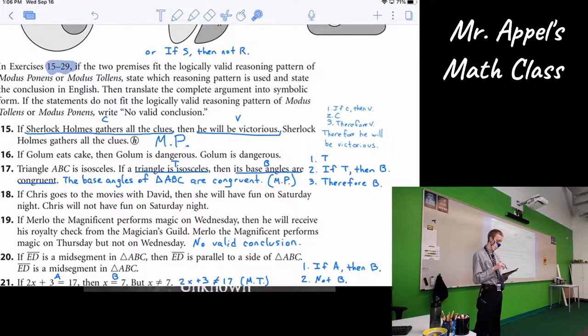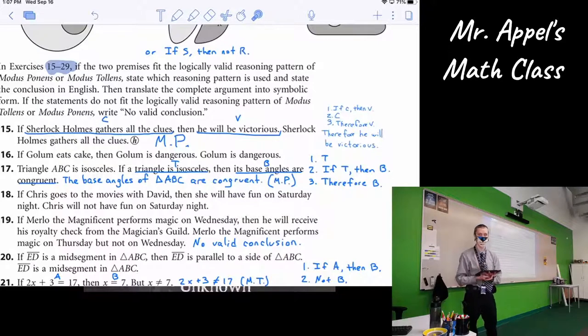Most often we'll find the conditional first and then the statement, but you can put the standalone statement before the conditional. Doesn't make a difference. But definitely last should come your conclusion, therefore, B. And in this case, you want to write it for the particular case. If we're talking about triangle ABC, we're going to conclude the base angles of triangle ABC are congruent. All right?